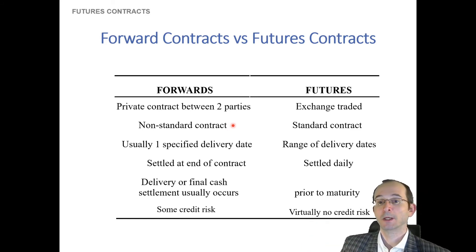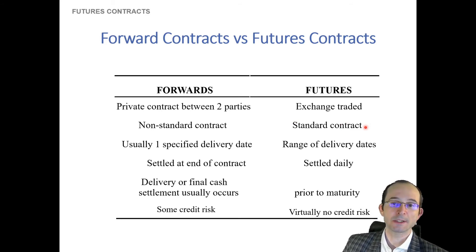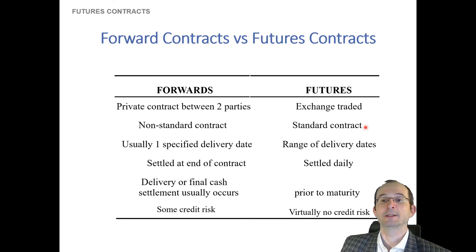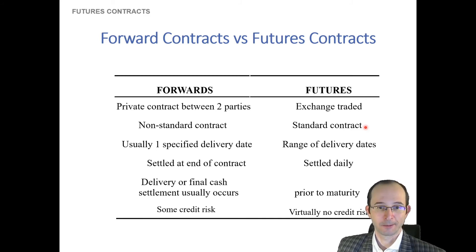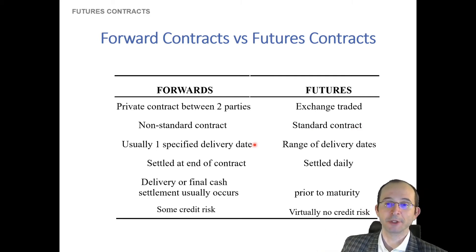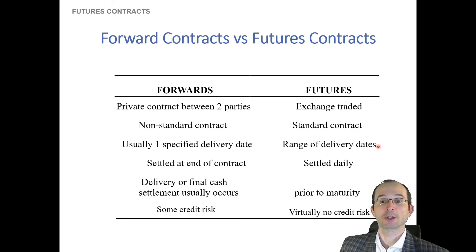Anything that two parties are willing to agree to can be parametrized as a forward contract. Whereas a futures is a standard contract — they have standard expiration, standard quantities, standard pricing rules by different grades of underlying asset. Much less room for customization, but in exchange, much greater liquidity because there are more market participants who would like to trade a standardized contract. Since forwards are customized, they usually have one specified delivery date that both sides agree to, whereas futures, being standardized to try to make them maximally flexible within standardized constraints, have a range of delivery dates.